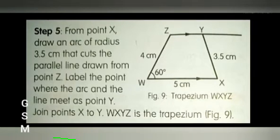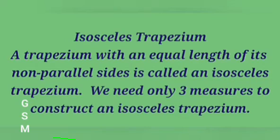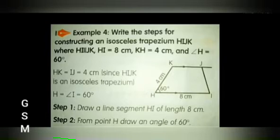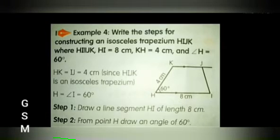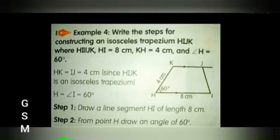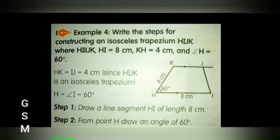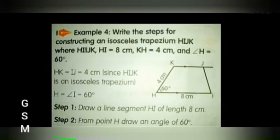Next, isosceles trapezium. A trapezium with equal length of its non-parallel sides is called an isosceles trapezium. We need only 3 measures to construct an isosceles trapezium. Next, let us see an example: write the steps for constructing an isosceles trapezium HIJK.